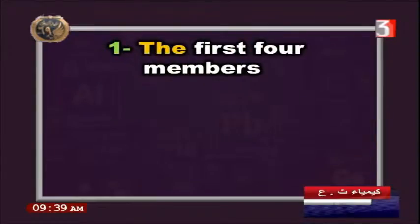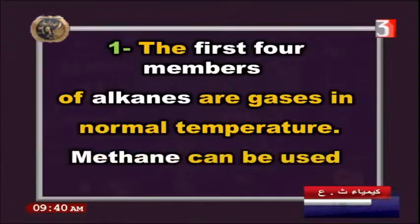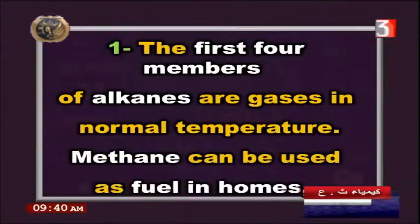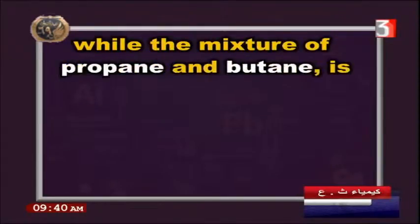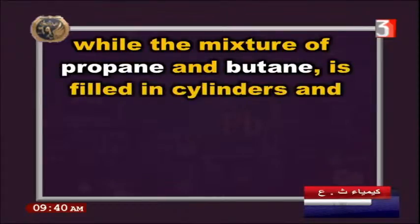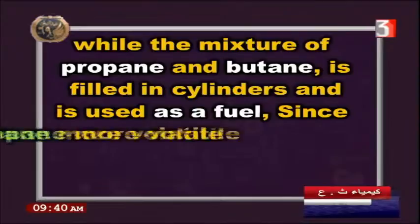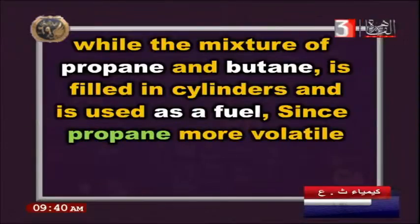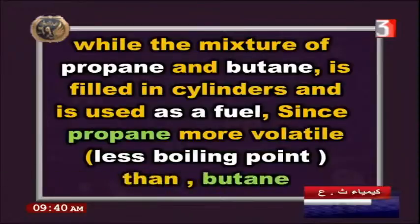The physical properties: the first four members of alkanes — with up to four carbon atoms — are gases at normal temperature. Methane is used as natural gas and as fuel in homes. A mixture of propane and butane is filled into cylinders and used as fuel (LPG). Propane is more volatile and has a lower boiling point, making it a more flammable gas than butane.